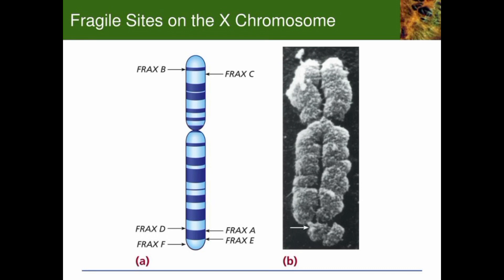An X-sperm is a type of sperm cell that carries an X-chromosome. In humans, sperm cells from males are responsible for carrying either an X-chromosome or a Y-chromosome, which determines the sex of the resulting offspring when they fertilize an egg cell from a female. When an X-sperm fertilizes the egg, the resulting offspring will be female, since the resulting zygote will have two X-chromosomes.